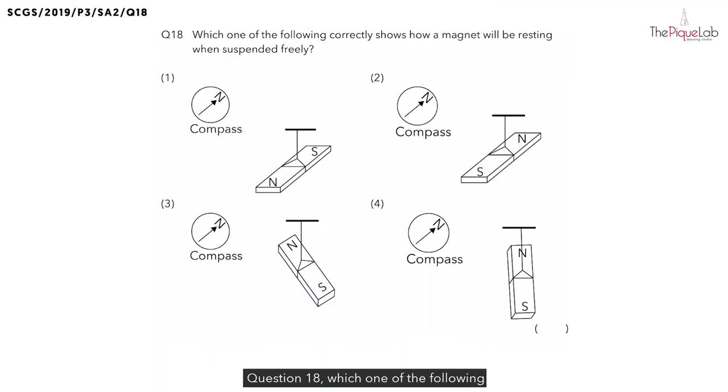Question 18: which one of the following correctly shows how a magnet will be resting when suspended freely? Now let's imagine when we have a freely suspended magnet, what's going to happen to it? Yes, the magnet is going to spin, but eventually it will come to a stop. Now when the magnet comes to a stop, it will always rest in which direction?